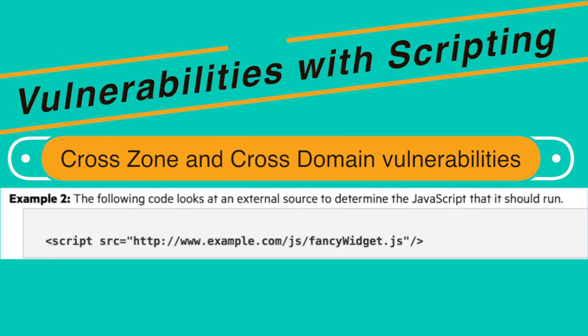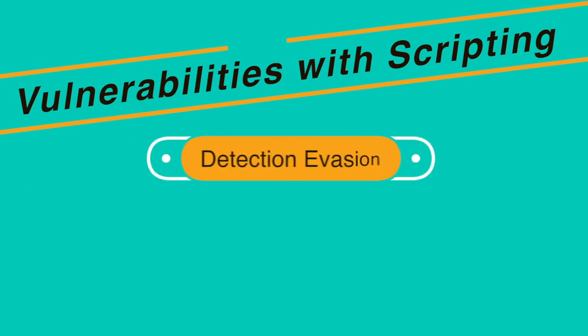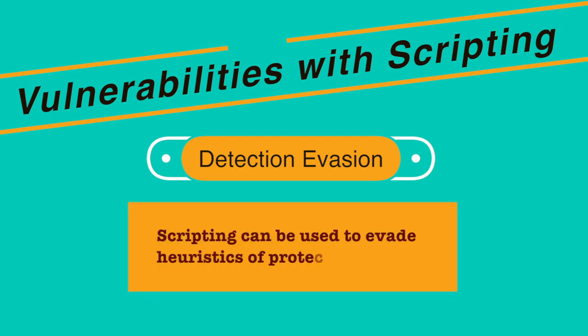When an attacker inserts a special JavaScript code and gains access to the web server's directory, they can change the index page, alter the database, and insert malicious code. The third vulnerability is detection evasion. Antivirus, intrusion detection systems, and intrusion prevention systems work by looking for heuristics — specific patterns in content. If a known bad pattern is detected, appropriate actions can protect the user. However, scripting in web pages can be used to evade such protective systems due to the dynamic nature of programming languages.